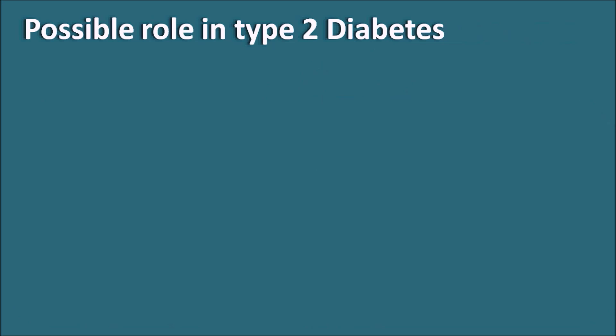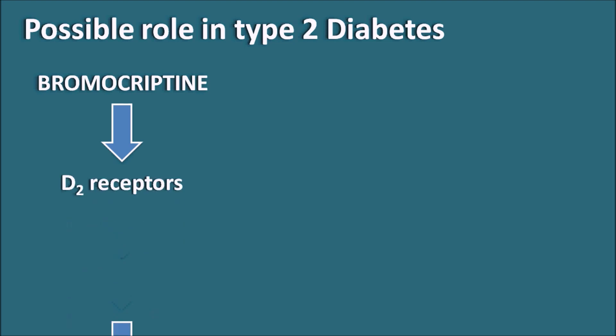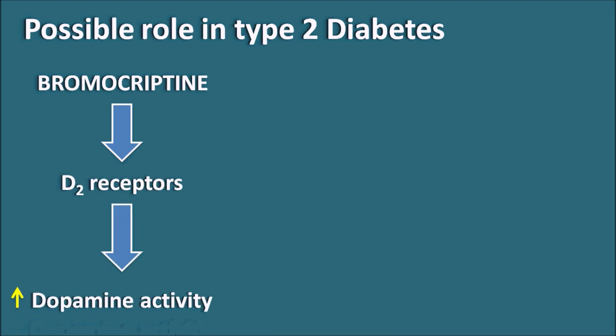Regarding type 2 diabetes: Bromocriptine acts on D2 receptors and increases dopamine activity. Apart from this, it can also modulate norepinephrine and serotonin (5-HT) activity. By increasing dopaminergic transmission, it can reset the hypothalamus so that insulin resistance, hepatic glucose production, triglycerides, and fatty acid production can be controlled.